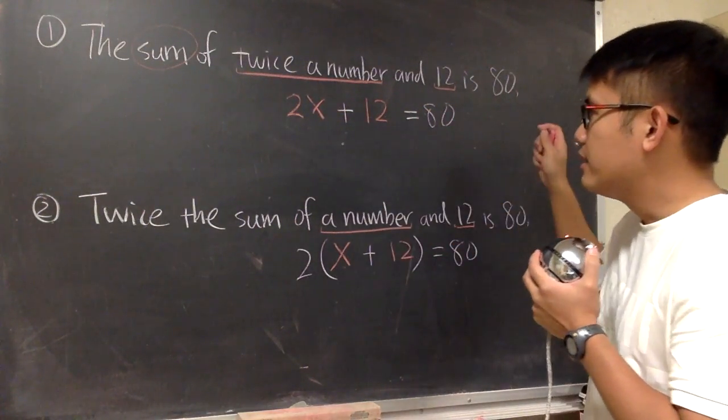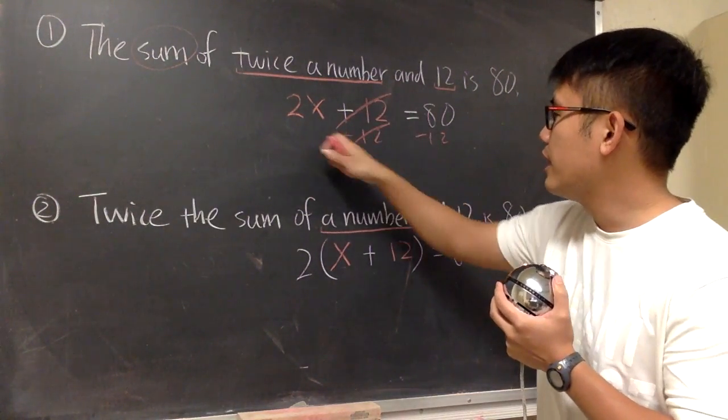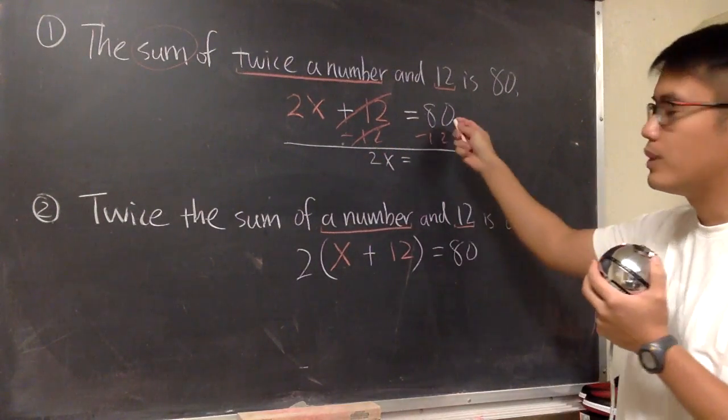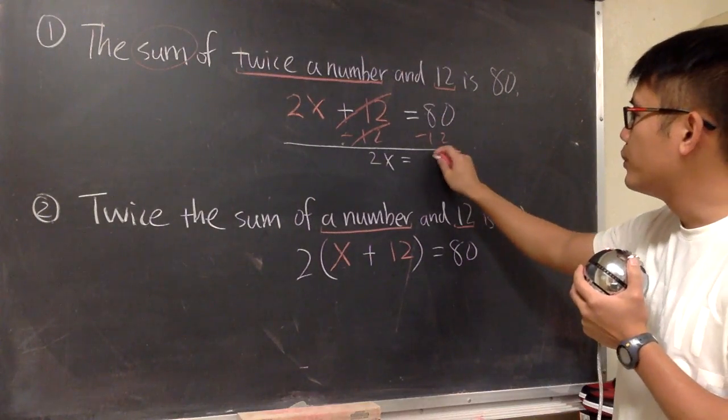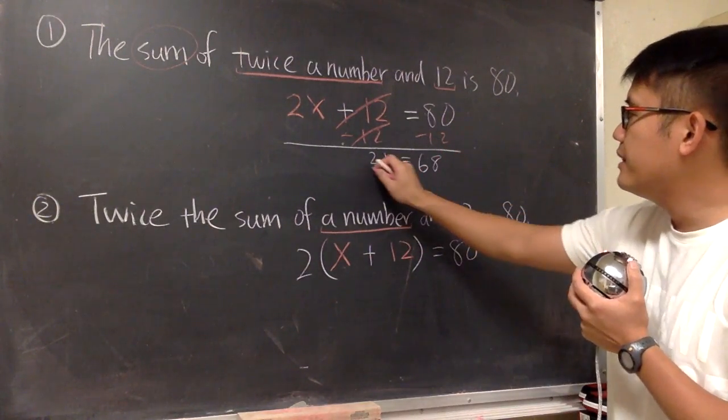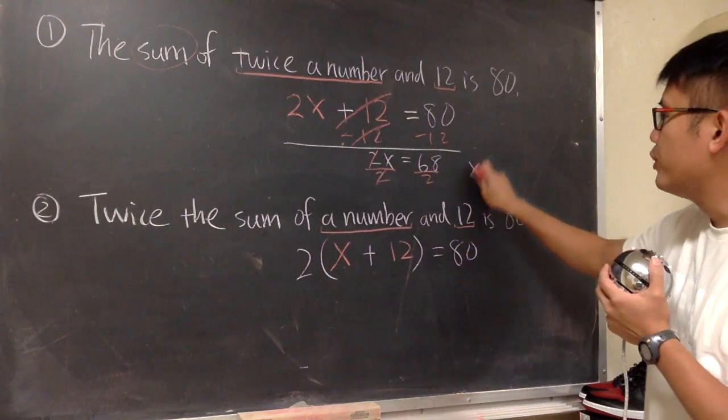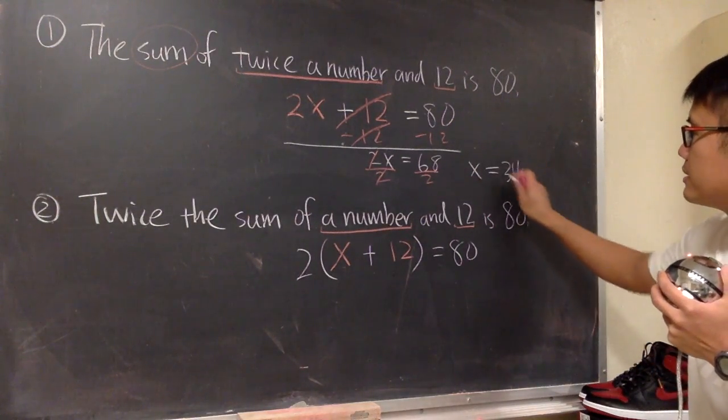For this one, this is the setup. And now I can just subtract 12 on both sides. They cancel. And then I get 2x is equal to, what's this? Well, 80 minus 12, we get 68. And then we can divide it by 2 on both sides, so that the unknown number x is equal to 68 divided by 2, 34.